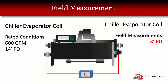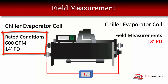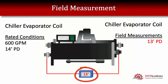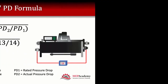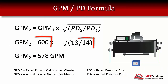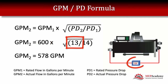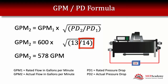We're going to take all the known rated conditions of the new piece of equipment — in this example, the evaporator of a chiller — and the actual measured pressure drop from the field technician. Here's our formula: all we're going to do is put in the known rated values for the evaporator, which is GPM1. The rated GPM is 600 times the square root of the actual measured pressure drop, which came out to be 13 feet, divided by the rated pressure drop of 14 feet for our example evaporator.